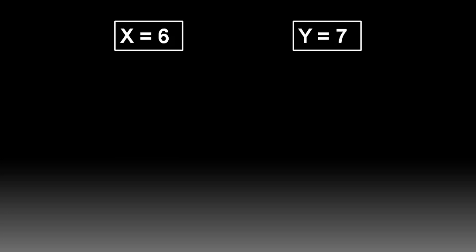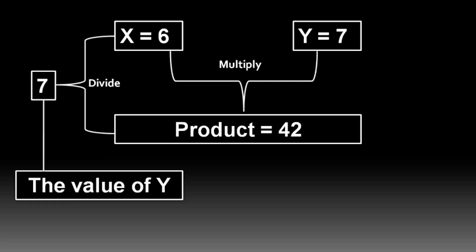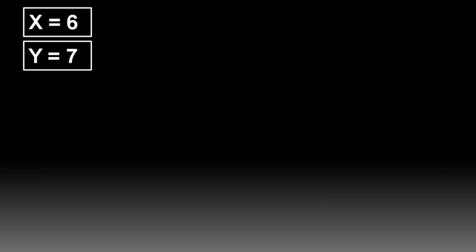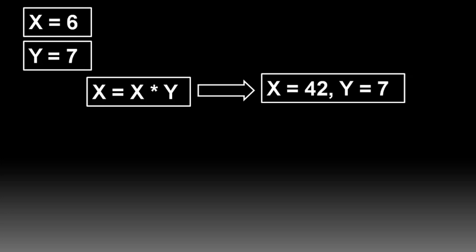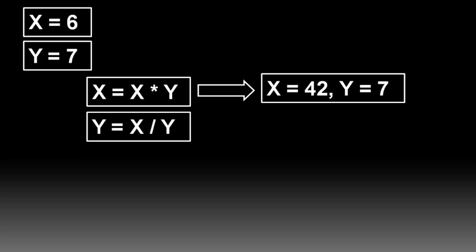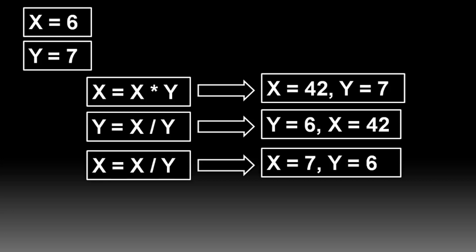So the two numbers are first multiplied and the product is then divided by one of the values. For X: 42 divided by 6 is 7, which is the value of Y. Now again we divide the product with the other value, giving us 6, the value of X. Step by step: first X and Y are multiplied and stored in X — X equals 42 and Y equals 7. Then we divide X by Y and store the result in Y — Y equals 6 and X equals 42. Finally, we divide X by Y and store the value in X — X equals 7 and Y equals 6.